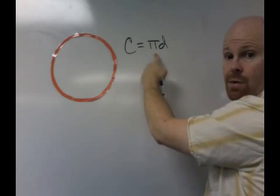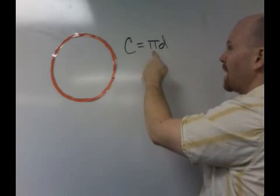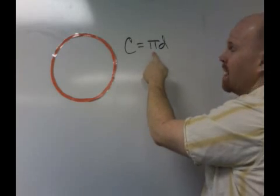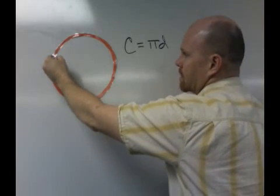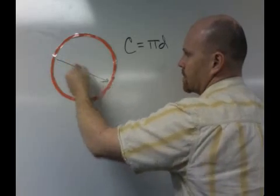Pi is either 3.14 or pi is 3 and 1/7th. And then d always stands for the diameter, and in this case, the diameter is right here. Here's the diameter.